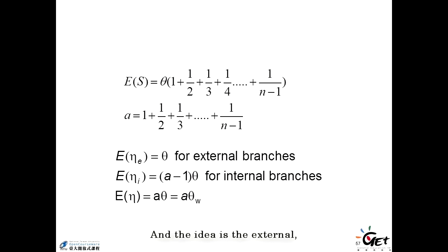And the idea is the external expectation of the external branch will approximately equal to theta for all the external branches. But the internal ones will have a relationship with the true theta times a minus 1. A is the same estimate as the segregating sides. So that's the comparison.